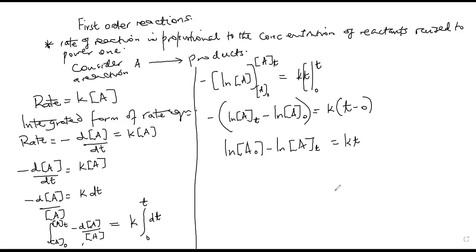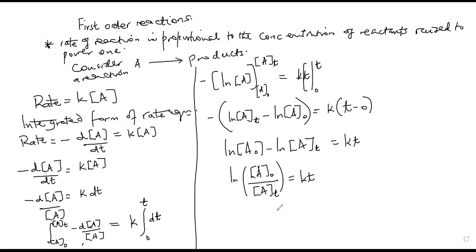This equation can be rewritten using the laws of logarithms. When you have ln[A]₀ minus ln[A]t, this is the same as ln([A]₀/[A]t) = kt. This equation can also be written as 2.303 log([A]₀/[A]t) = kt, since the natural logarithm can be converted using 2.303.